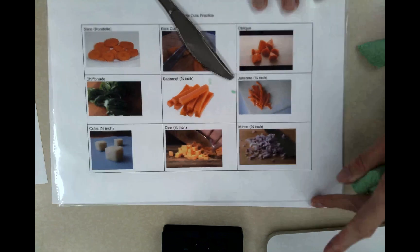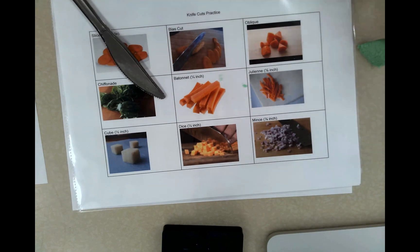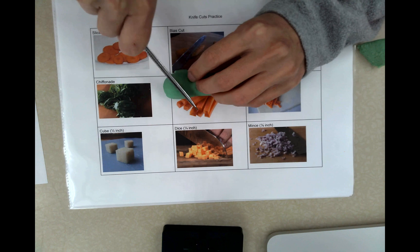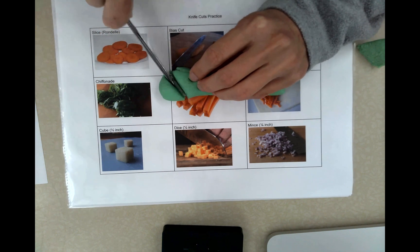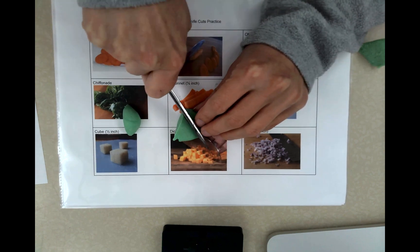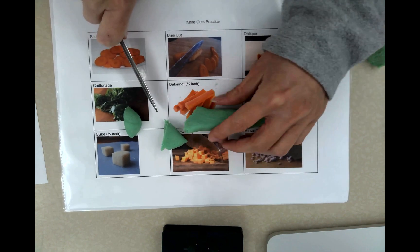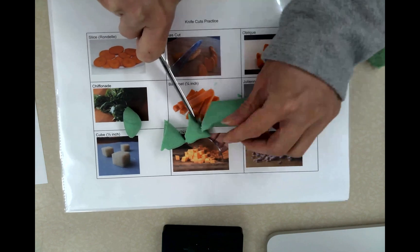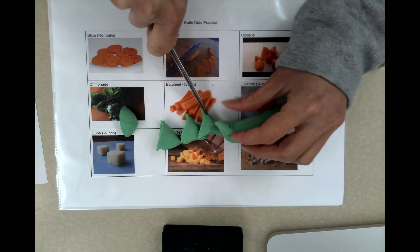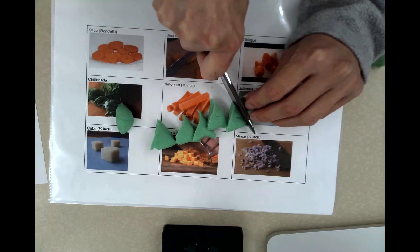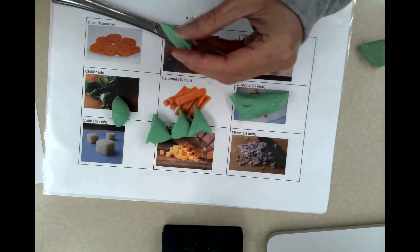And then the last one I'm going to do with this carrot that we're using today is an oblique cut. And so that oblique cut, we're going to make a cut diagonally. And then we're going to roll the carrot to the other side. And then we're going to make a diagonal cut. So it's going to look like a triangle piece. And again, I'm going to take a couple of those to my chart to show that oblique.